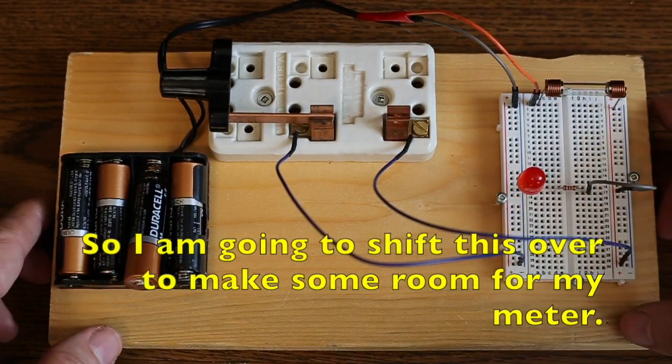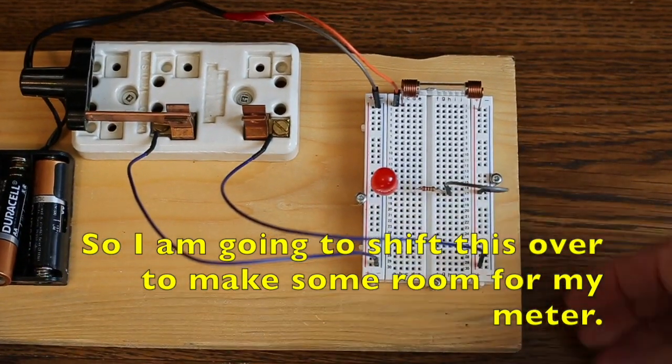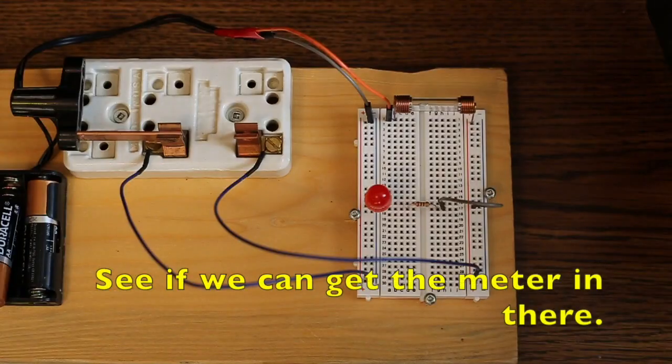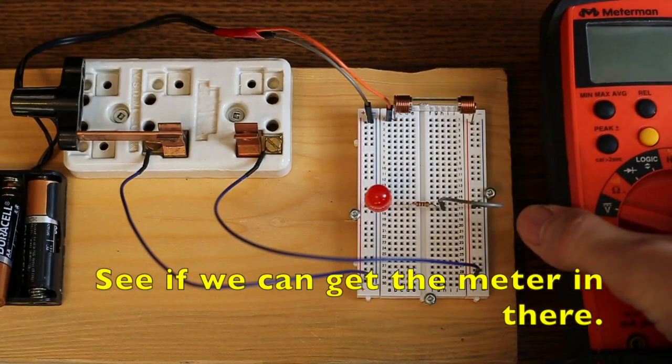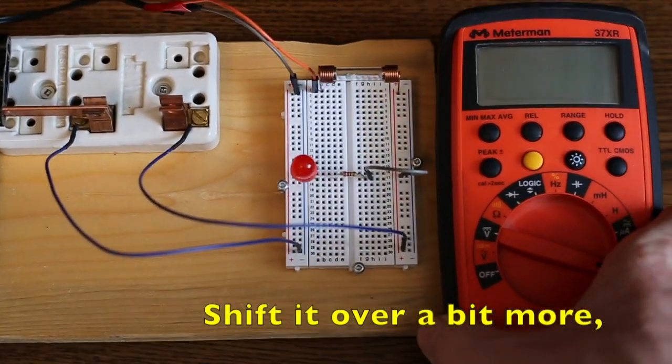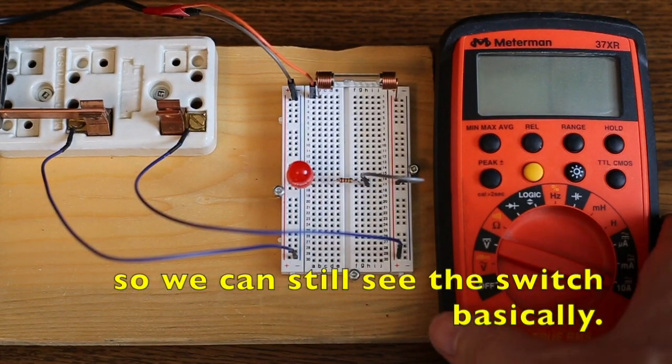So, I'm going to modify the circuit to add my meter into the circuit. So, I'm going to shift this over, to make some room for my meter, so we can see the meter. If we can get the meter in there. Over a bit more, so you can still see the switch, basically.